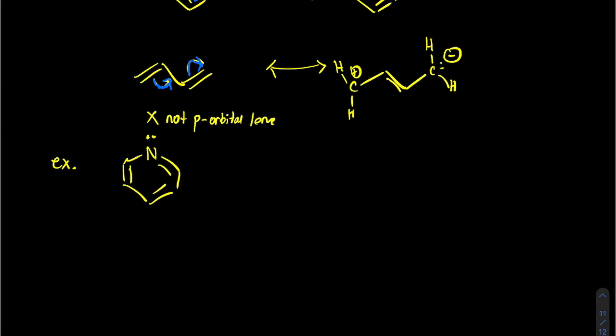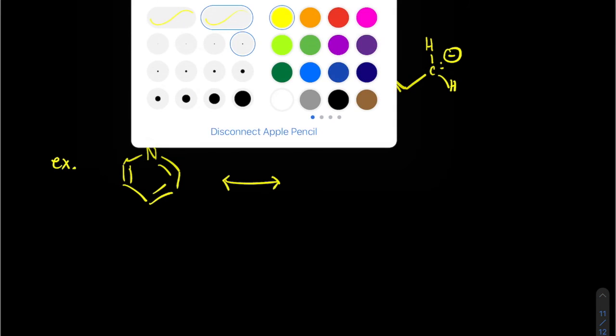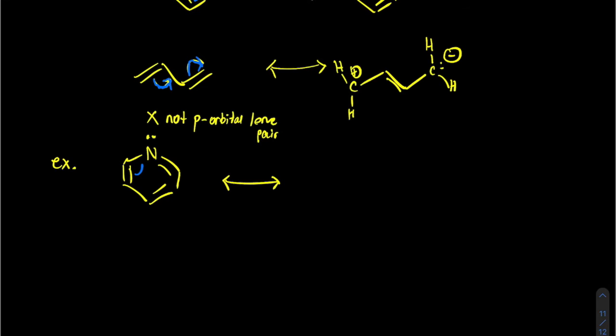And if you're a little bit confused about that, read up on hybridization and you'll be able to convince yourself that, oh yeah, that's an sp2 hybrid nitrogen lone pair. So the only resonance structure really that you have available for this guy is to swing those.